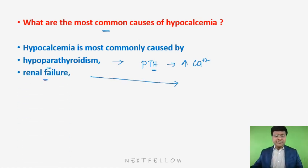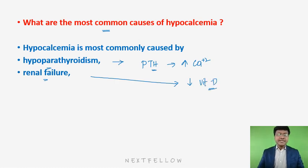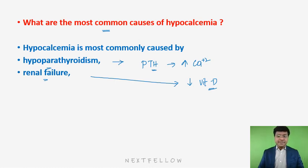In patients with renal failure, there is decreased vitamin D synthesis. Vitamin D is required for absorption of calcium across the GI tract. So if vitamin D is absent secondary to renal failure, that can make the individual land up in hypocalcemia.